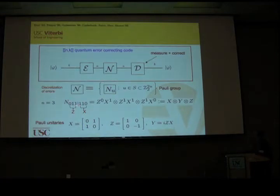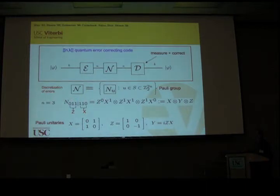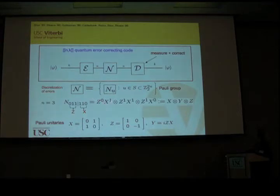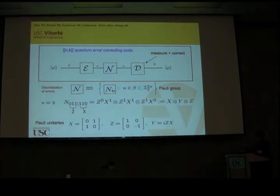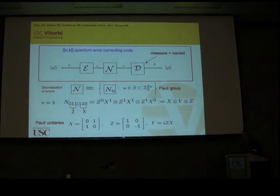The nice thing, which was pointed out by Daniel yesterday, is that you don't need to worry about everything that could be inside this noisy box N, because there's this lovely phenomenon of the discretization of errors. It suffices to just worry about what happens if you multiply your qubits by Pauli states, where these Pauli states are tensor products of Pauli operators. Here are the Pauli operators, which we all know and love. There's a representation of these up to a phase, where we represent a Pauli operator on three qubits by two strings of three classical bits. We think of the first three bits as being the z part, and the second as being the x part.